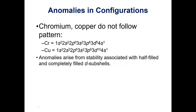There are a few elements that do not follow the pattern, like chromium and copper. According to the standard filling order we'd fill the s shell first then start the d shell, but what we actually find is a half-filled s shell with more electrons in the d shell. This comes from extra stability associated with a half-filled d shell. I don't expect you to memorize all exceptions — just be aware they exist.